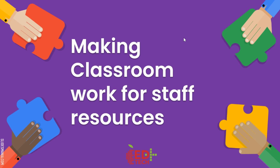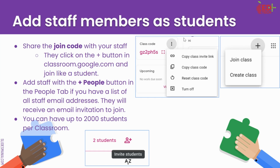Next, we'll talk about making Google Classroom work for staff resources. Unlike a Google Classroom for students, we are working with professionals here, so we're going to do things a little bit different. The first thing is you're going to add your staff as students. Either you're going to get that join code from Google Classroom and send it out to your staff and then have them go to classroom.google.com and click join class and type in the code, or if you have access to a list of all of your staff email addresses, you can use the plus people button and add all of them. Then they will receive an email with an invite notification, which makes it even easier instead of using the class join code.